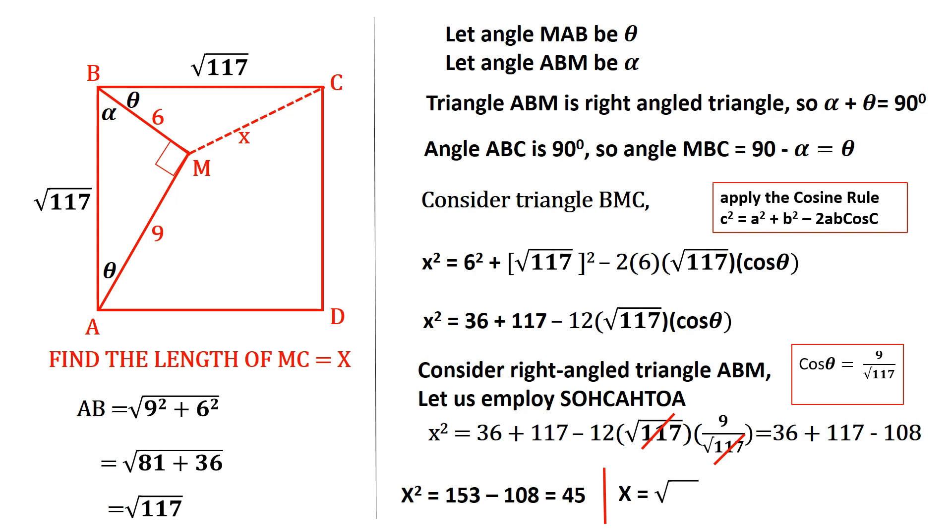To find X, we find the square root of both sides, so X equals the square root of 45. And when that is simplified out, X is 3 root 5. And that is how to find the length of MC.